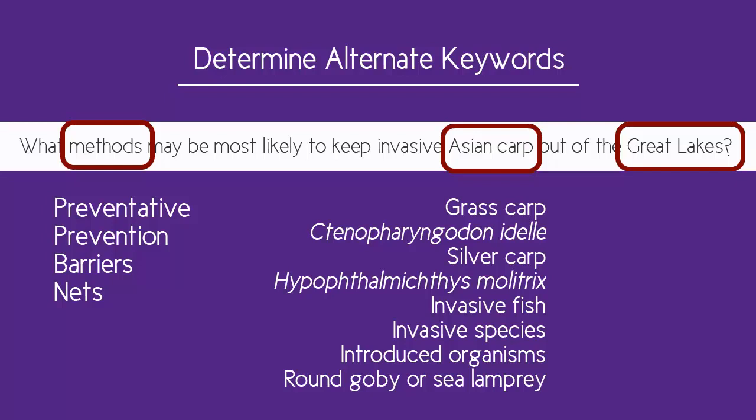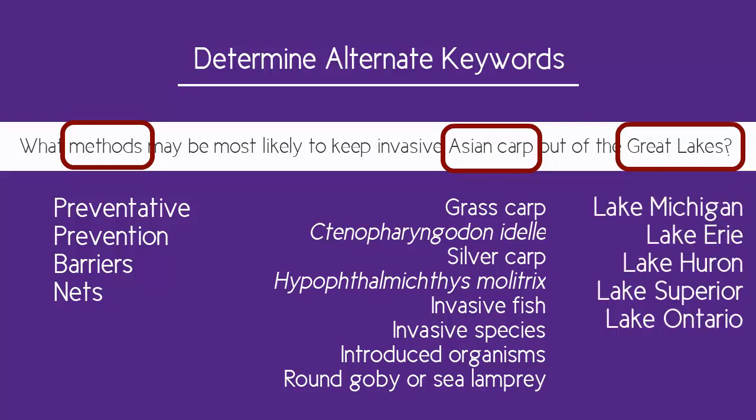Additional keywords for Asian carp include: invasive fish, invasive species, introduced organisms, or possibly other invasive fish such as the round goby or sea lamprey. And for the Great Lakes, the names of each of the individual Great Lakes.